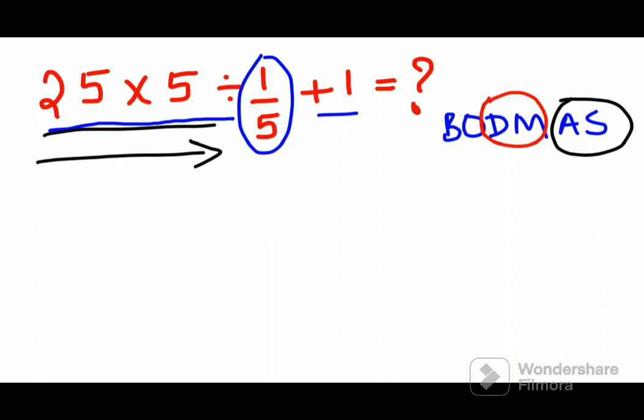So let's multiply 25 into 5. What answer do you get? That is 125.